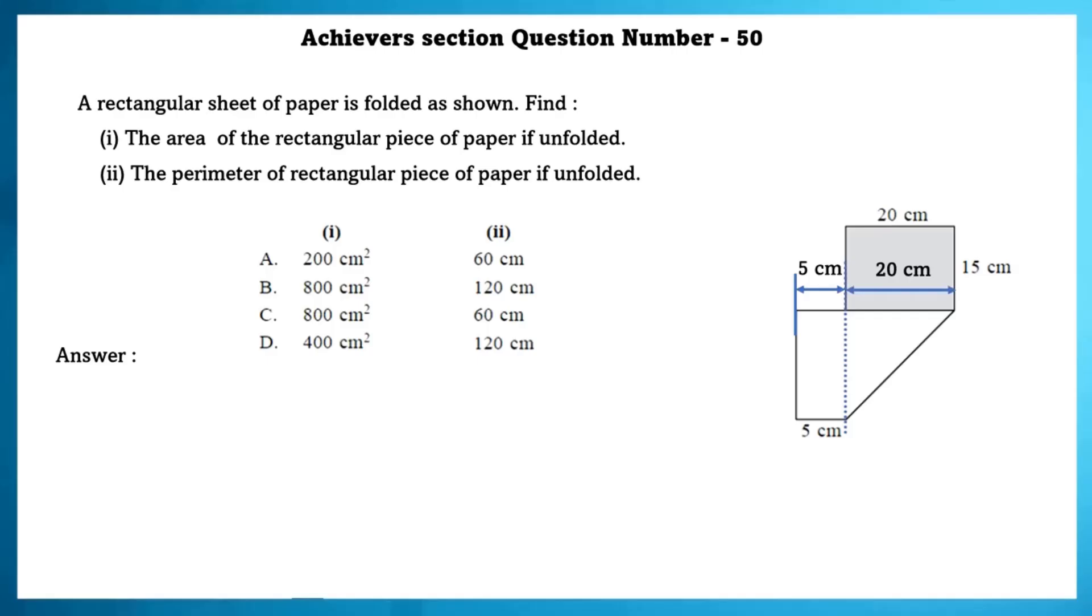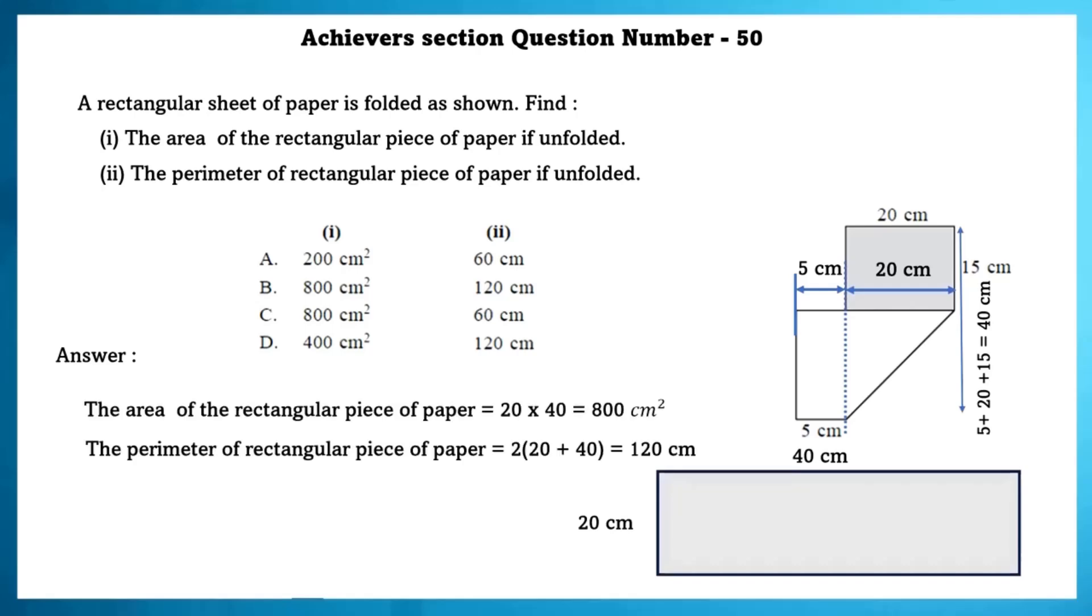And also, adding all these lengths and breadth, we get the answer as 40 centimetres. So, this total length is equal to 40 centimetres. Now, the area of the rectangular piece of paper is equal to 20 into 40, which is equal to 800 centimetres square.